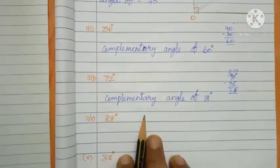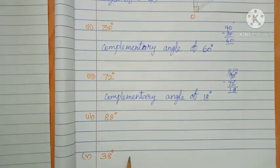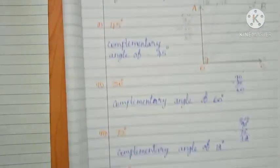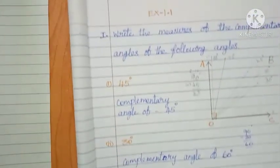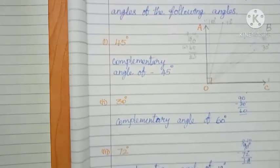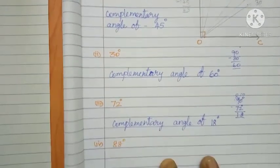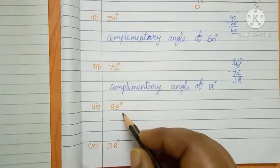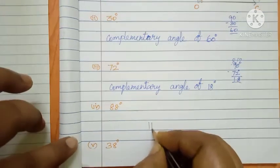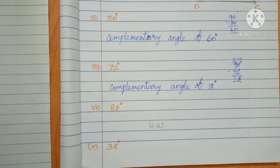The remaining two sums — eighty eight and thirty eight — you do it yourself, children, so you understand the concept. Thank you children. In the next class we will learn supplementary angle. Complete Exercise 1.1 in your classwork: forty five, thirty, seventy two, eighty eight, and thirty eight. Okay children, thank you.